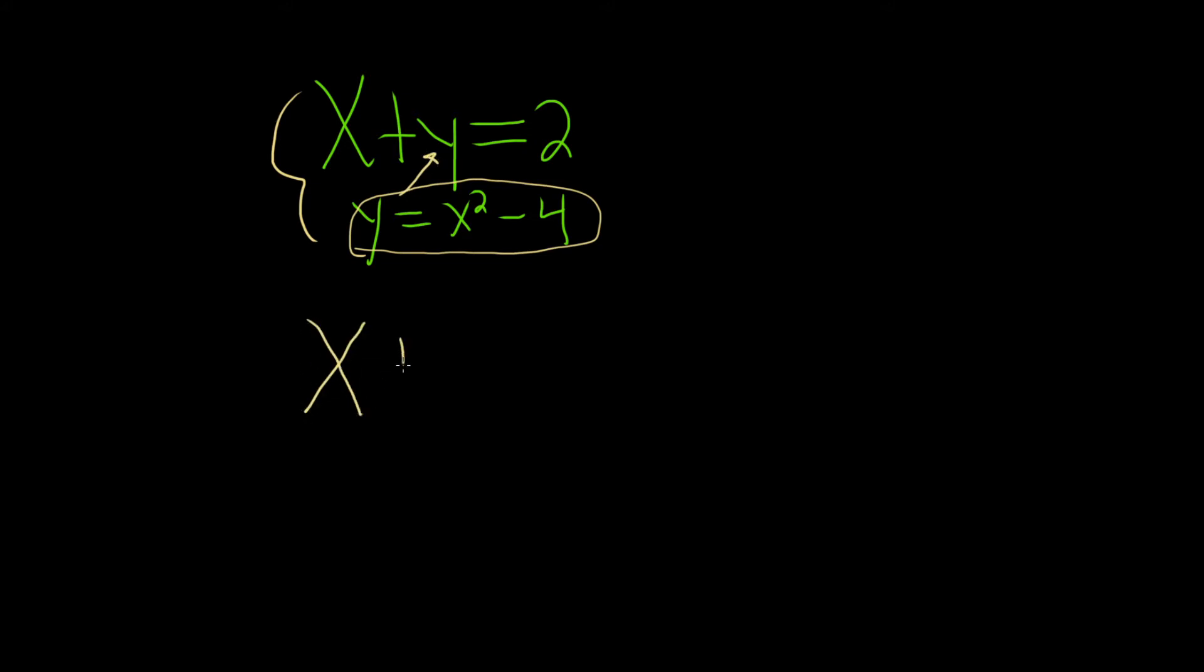So you have x plus y equals 2. Just writing it one more time. So that's x plus, and now let's make that substitution. So y is actually x squared minus 4, and that's equal to 2, because we're plugging it in here.